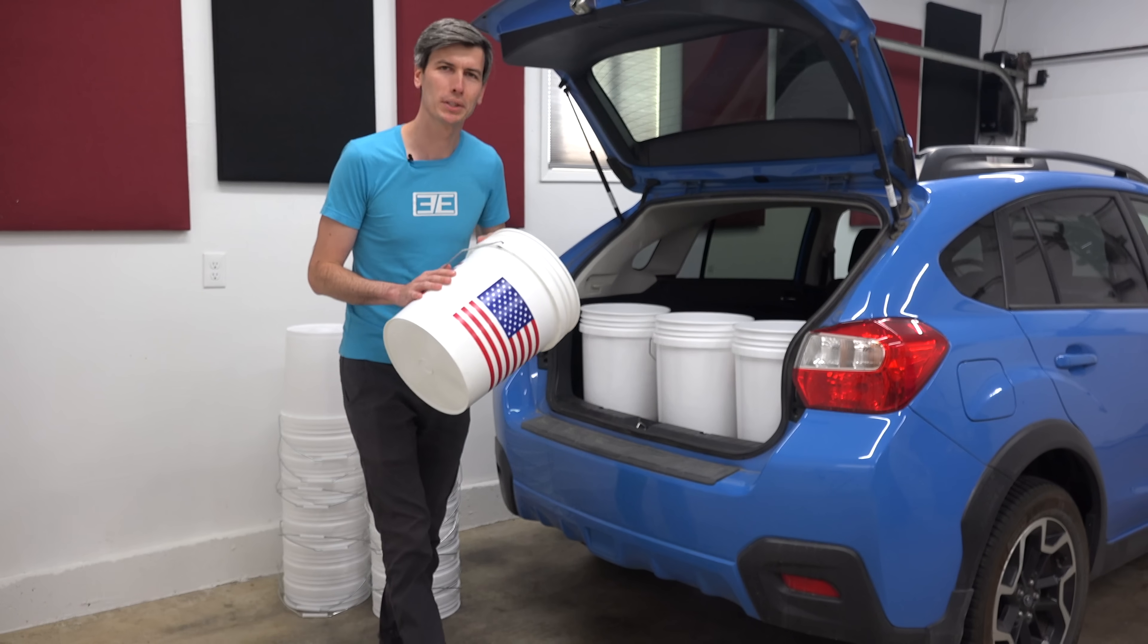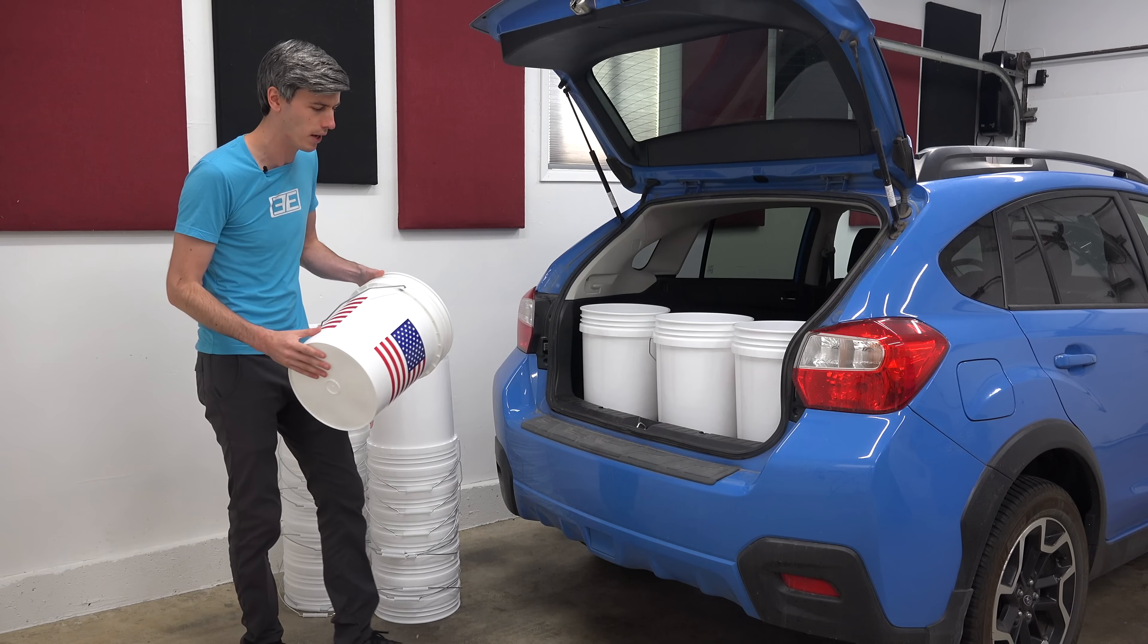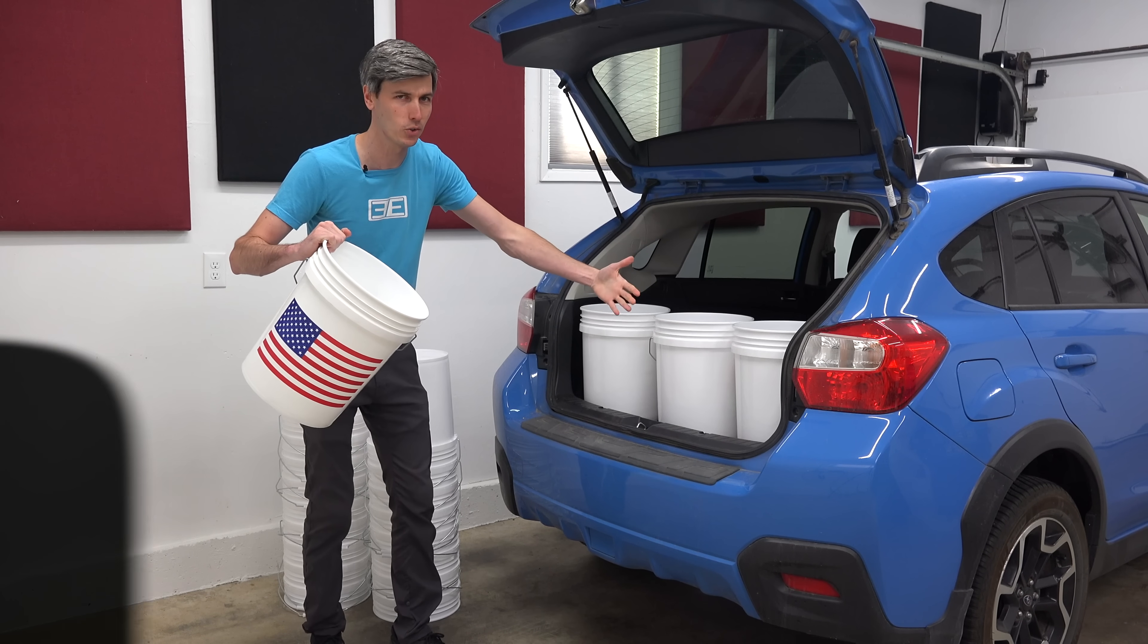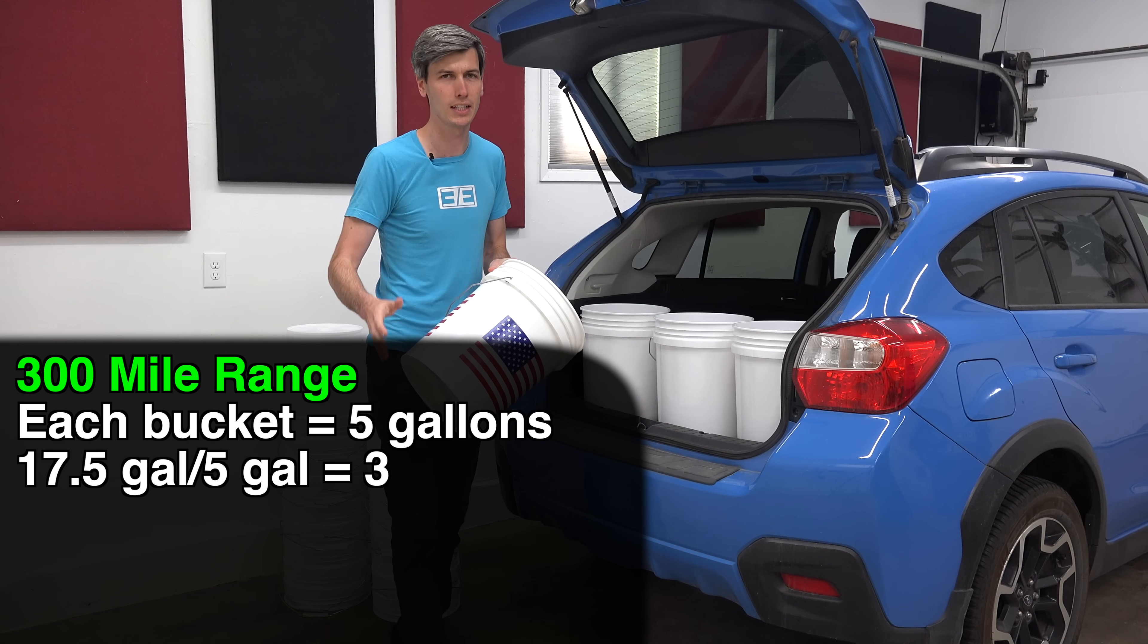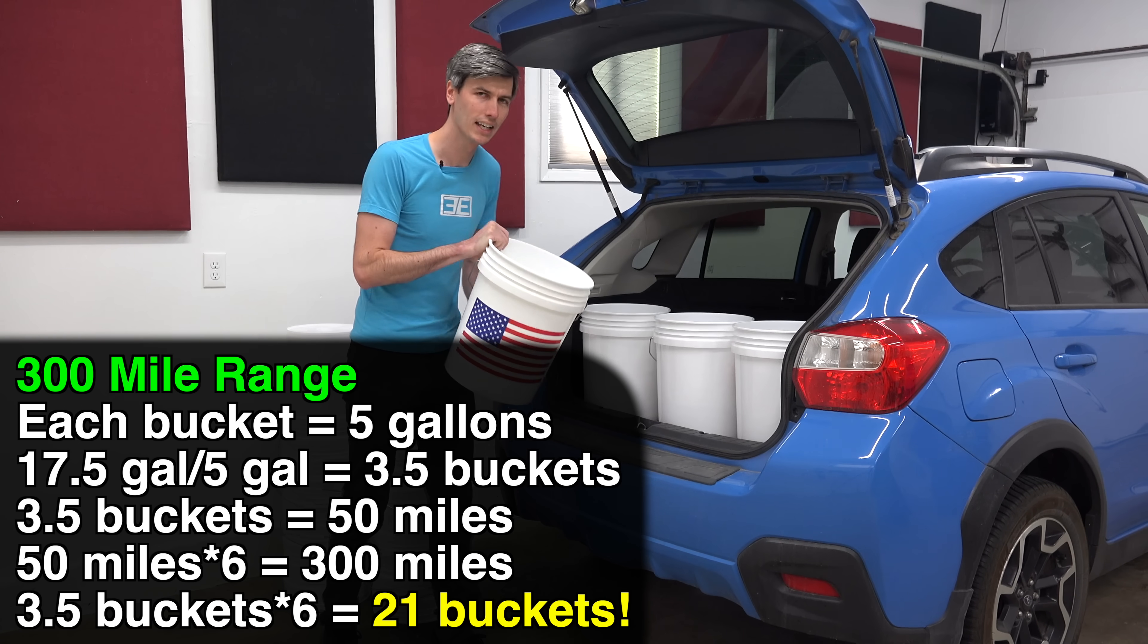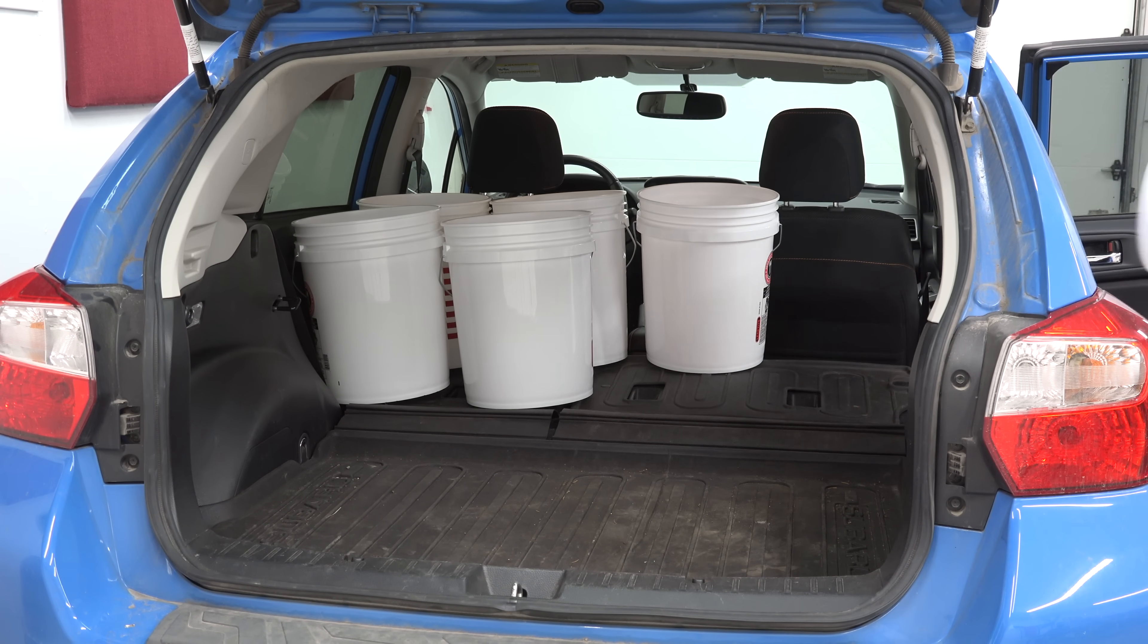So when it comes to range the number everyone loves to talk about is 300 miles. We want our cars to be able to travel 300 miles without stopping. That's what we're used to with our gasoline cars. So electric cars, hydrogen cars, whatever it is, it needs to hit 300 miles. So let's look using these buckets as a visual how much space is required in order to store enough hydrogen to have a V8 powered vehicle travel 300 miles. So each one of these is five gallons. We just calculated that with 17.5 gallons, in other words three and a half of these buckets, we can travel 50 miles. So if we multiply that by six we get 300 miles. So three and a half of these buckets times six gives us 21 buckets.